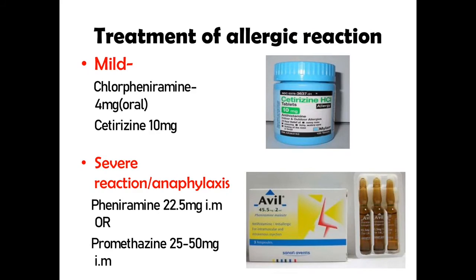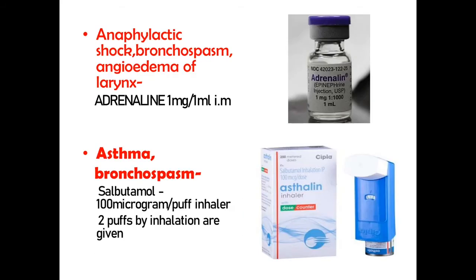In the treatment of allergic reactions, if mild, chlorpheniramine 4 mg or cetirizine 10 mg can be given orally. In case of severe reaction or anaphylaxis, pheniramine 22.5 mg or promethazine 22 to 50 mg can be given via intramuscular route. In case of anaphylactic shock, bronchospasm, or angioedema, adrenaline 1 mg per 1 ml intramuscularly can be given. For asthma or bronchospasm, the most effective drug is salbutamol — two puffs given by inhalation.